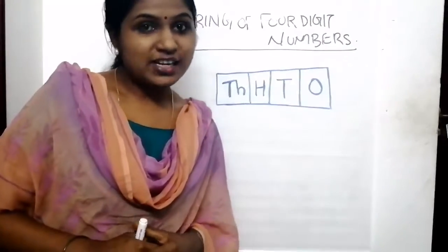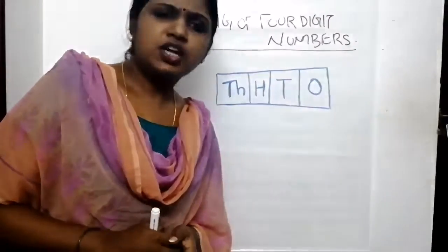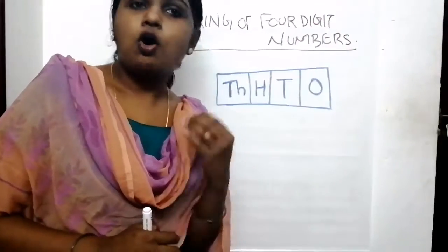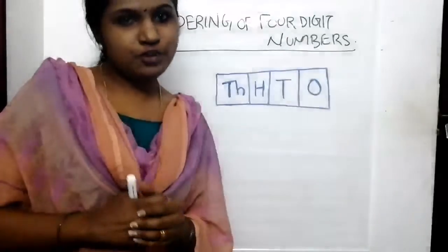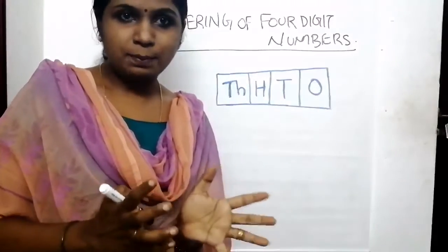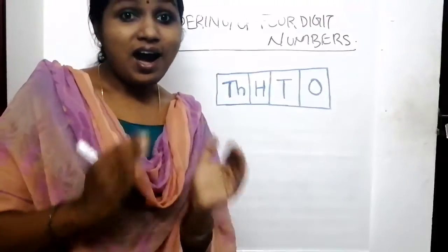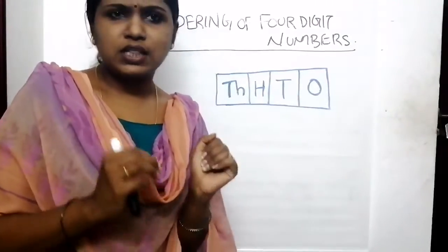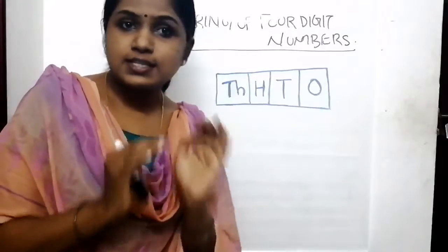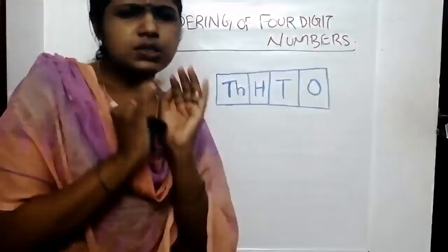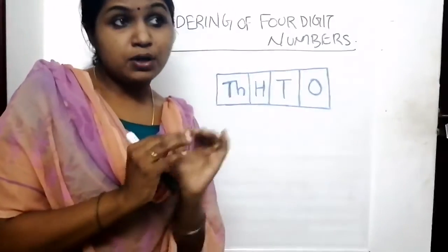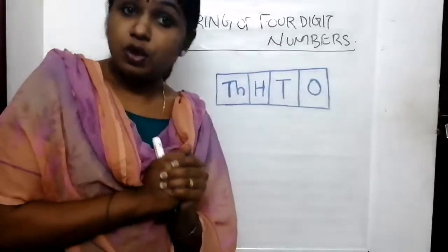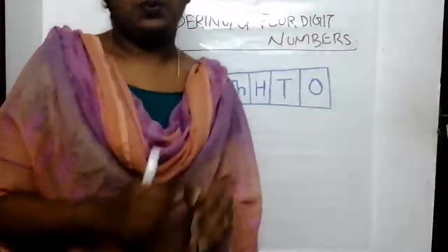Hello students, welcome. Today we are going to discuss about ordering of numbers. Ordering of numbers means arranging numbers in the order of their size, that is from smallest number to largest number.